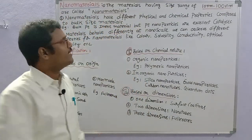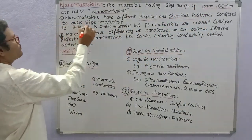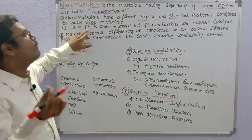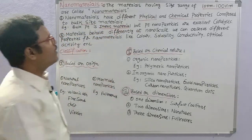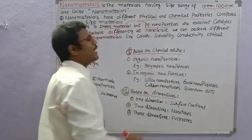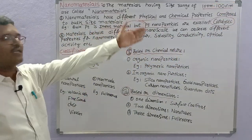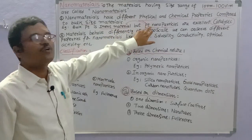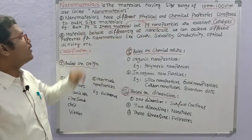Nanomaterials have different physical and chemical properties compared to bulk size materials. For example, bulk platinum — normal platinum metal — doesn't react, it is inert. But when this same bulk platinum metal is converted to platinum nanoparticles, it behaves as a catalyst. In organic chemistry, platinum nanoparticles exhibit catalytic behavior, whereas bulk platinum is an inert material.